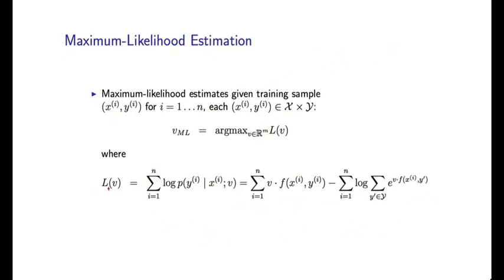Before we get to that, I want to talk about one critical property of L of v, which is the following. L of v is concave. And this means essentially it is a very nicely behaved function. So although in the general case, finding a closed form solution to this argmax is not going to be possible, because L of v is concave, it's fairly easy to optimize it. So what does it mean to be concave?